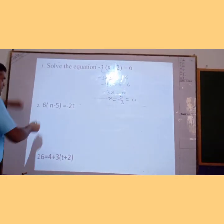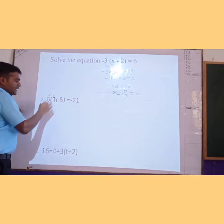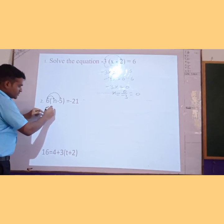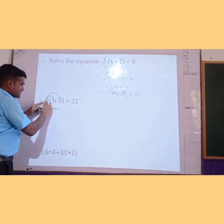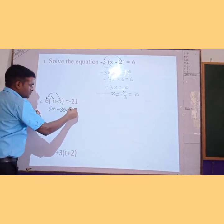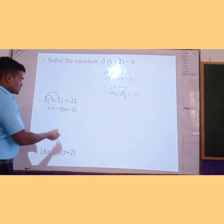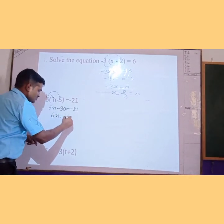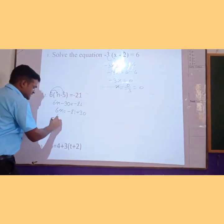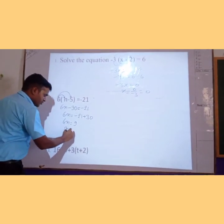Second problem: 6 into n minus 5 is equal to minus 21. So 6 multiplied by n gives 6n, and 6 multiplied by minus 5 gives minus 30, so we have 6n minus 30 is equal to minus 21. Now we will transpose minus 30 from left to right. We get 6n is equal to minus 21 plus 30, which is 9.